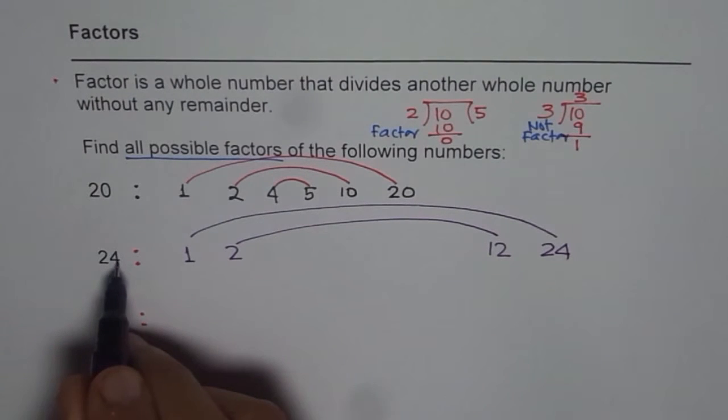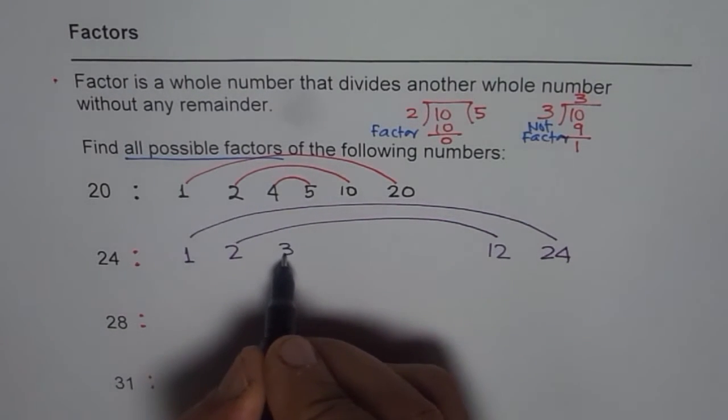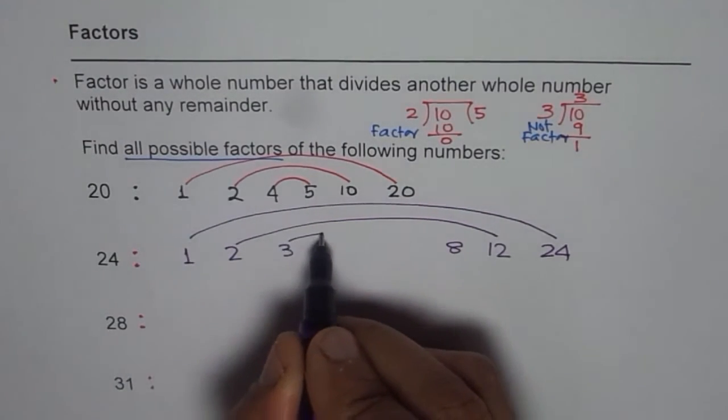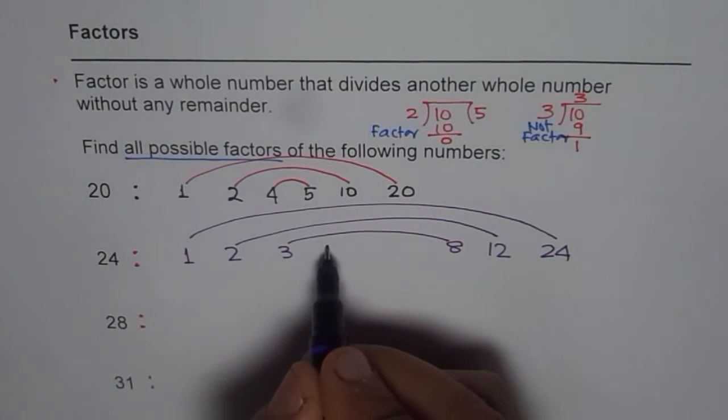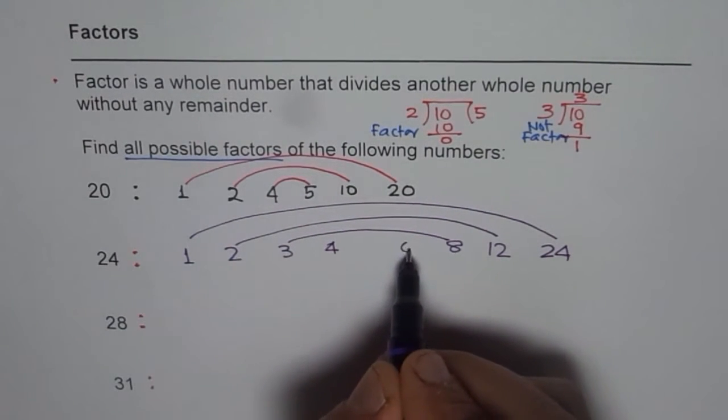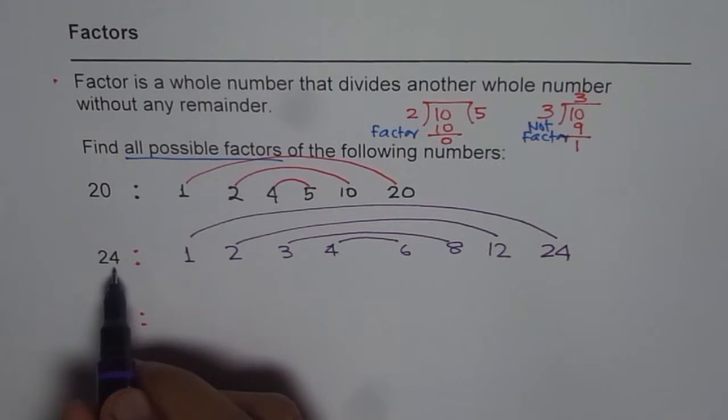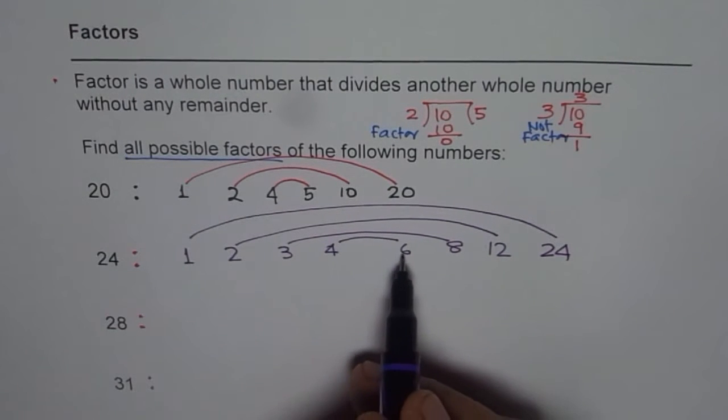3: 4 plus 2 is 6. When you add the numbers and it is divisible by 3, the whole number is divisible by 3. That's the divisibility rule for 3. So 3 times 8 is 24. How about 4? The last two numbers can go by 4. 4 times 6 is 24. It cannot be divided by 5 since it is not ending with 0 or 5.